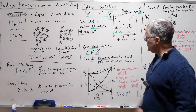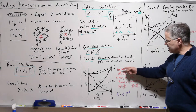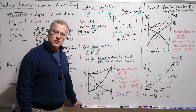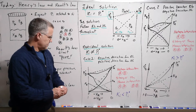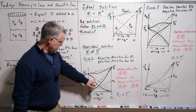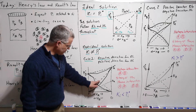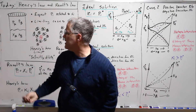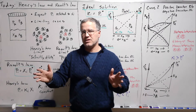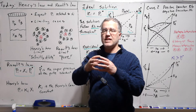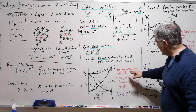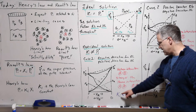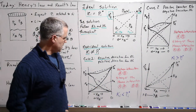What does a negative deviation from Raoult's law mean? The partial pressure is less than expected from the purely statistical Raoult's law. There's less A in the vapor than expected, meaning more A stays in solution — it's harder to get A out. This means the interaction between A and B is stronger than the interaction between A-A and B-B. The hetero interaction A-B is stronger than the homo interactions, and this results in the Henry's law constant being less than the vapor pressure.